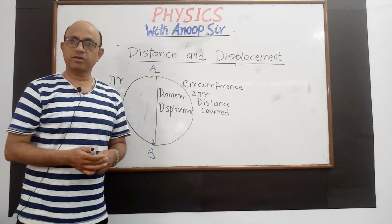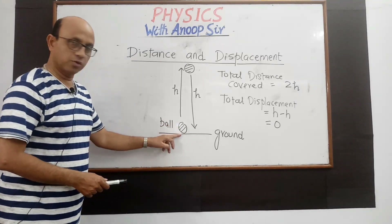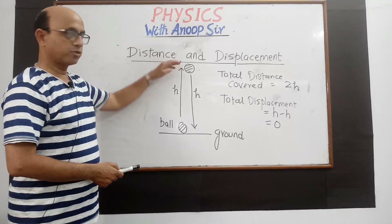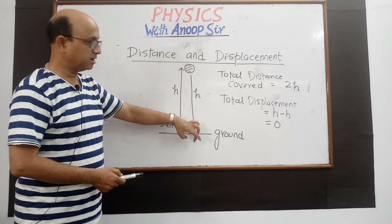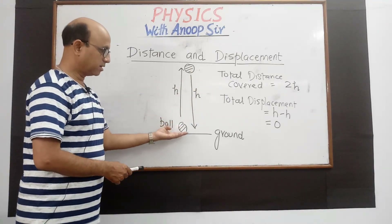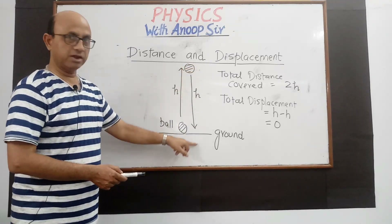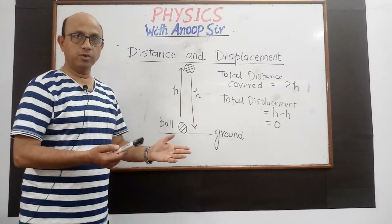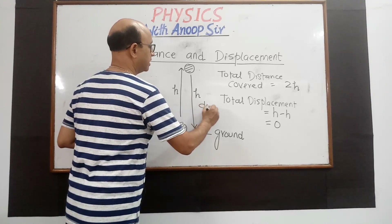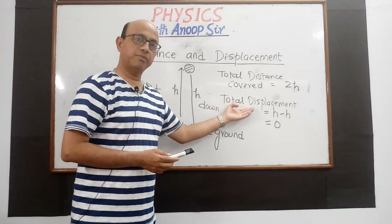एक और example देखते हैं — a ball thrown from ground to a certain height h. Ball ground से चली और h height तक आई, तो distance covered हुआ h. अब ये ball ऊपर आने के बाद नीचे गिर गई, then again it covered distance h, so total distance covered हुआ 2h. लेकिन जाते समय displacement है plus h और वापस आते समय minus h, क्योंकि जाते समय direction upward है और आते समय downward है। So net resultant displacement will be 0.